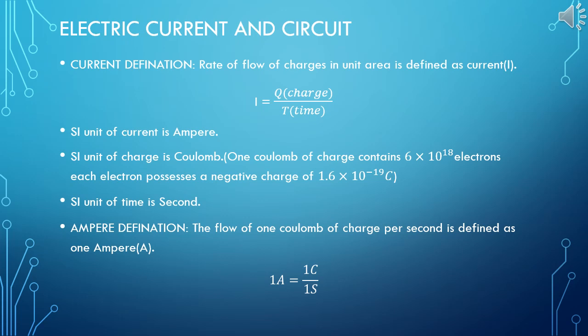The next one is ampere. The definition: the flow of one coulomb of charge per second is defined as ampere. And the formula is 1 ampere is equal to 1 coulomb per second.